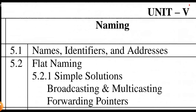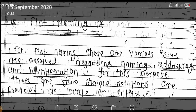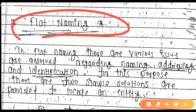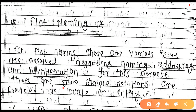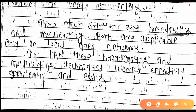You can see on the screen — under flat naming, the first point is Simple Solutions. In flat naming, there are various issues resolved regarding naming, addressing, and identification. For this purpose, there are two simple solutions. There are two solutions: broadcasting and multicasting.